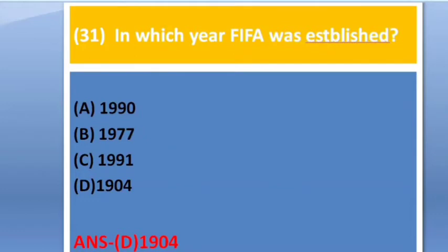Question 31: In which year was FIFA established? Options: 1919, 1977, 1991, 1904. The answer is option D — 1904.